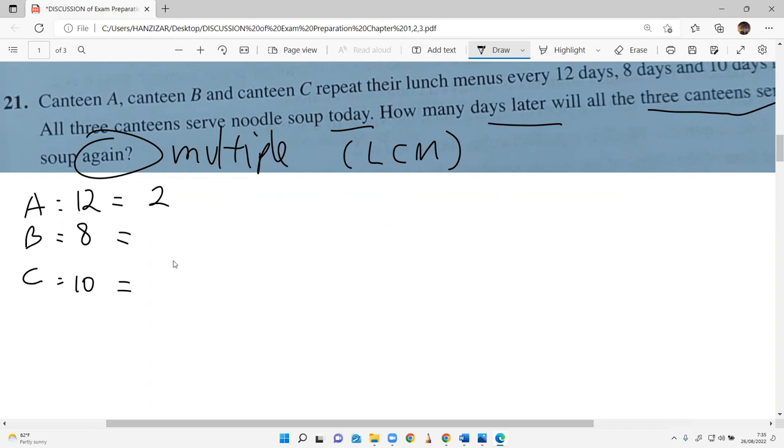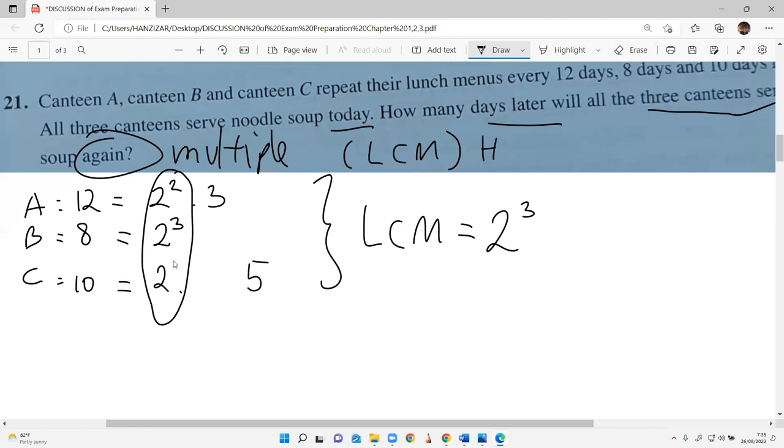Make it fast. 12: 2 squared times 3. 8: 2 cubed. 10: 2 times 5. Yes, and then we are finding the LCM. Take which? High and all, high and all. If it's high and all, take the highest. Times 3 times 5.